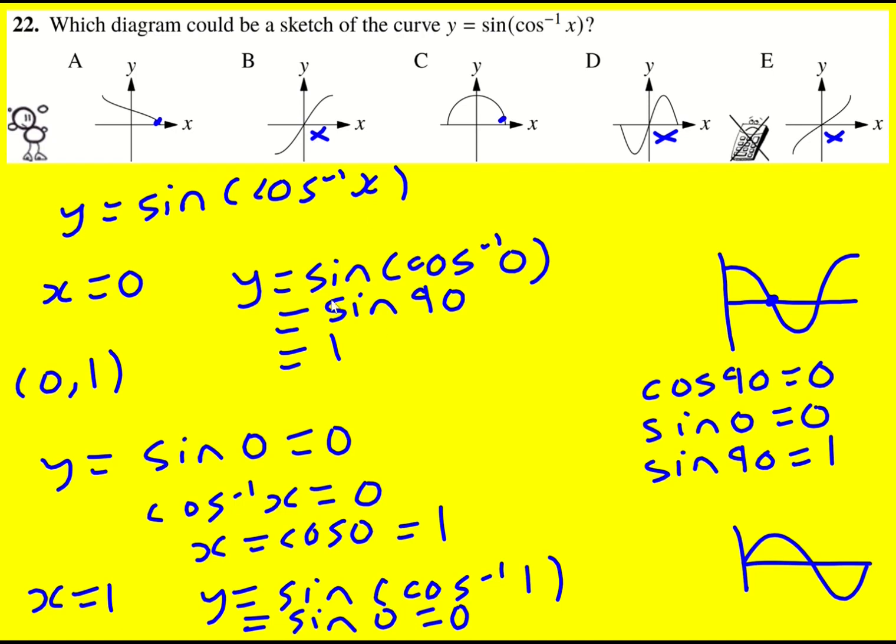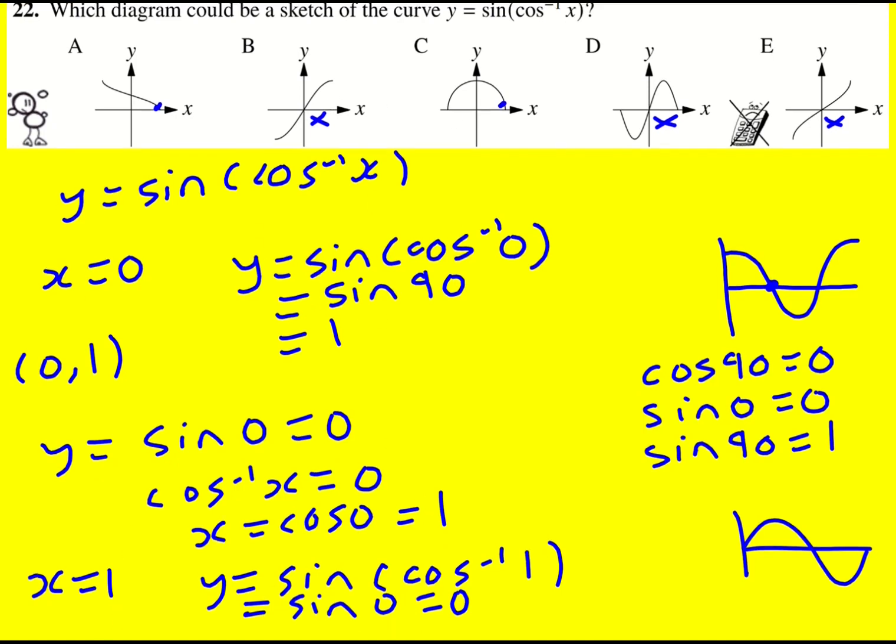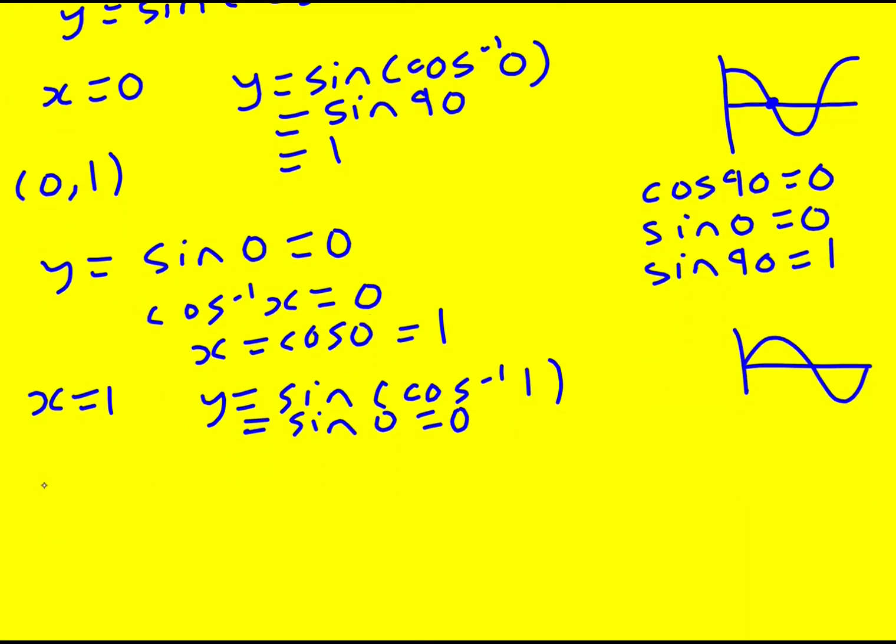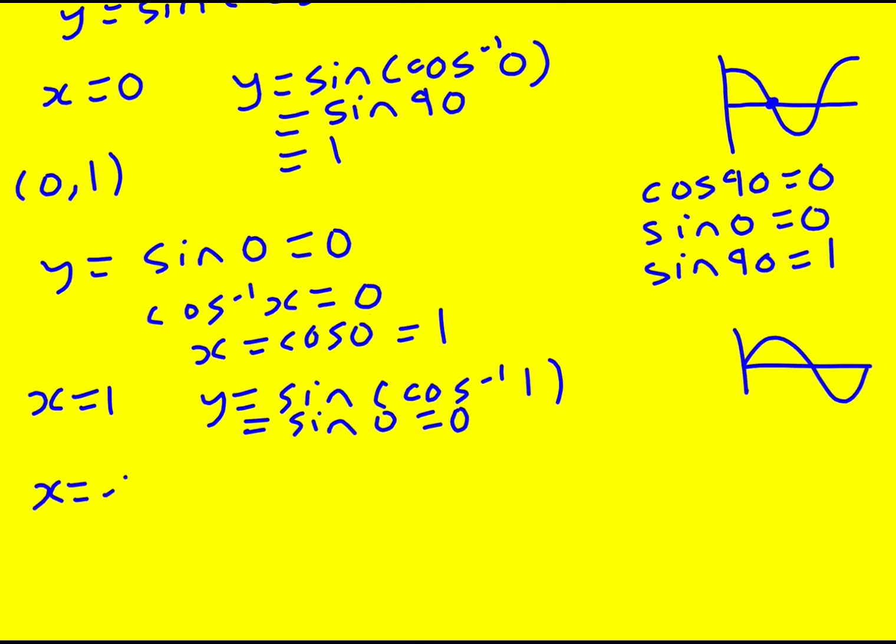Now actually that doesn't help because both of these hit the axis there. So I've just got to maybe think what happens when, okay, I've gone with one, right, let's try minus one. That looks like it's going to be the other side. So then I'm going to get y is equal to sine cos to the minus one of minus one. Now what value of cos gives me minus one? And that is going to be my 180.